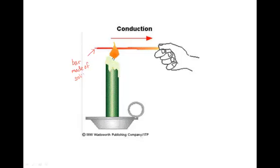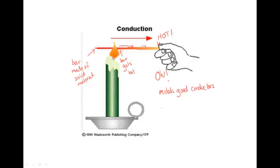Here we have a bar that's being held in a flame, and it's made of solid material. The heat from the flame will warm the particles — the atoms — in the bar. That energy will be transferred across the bar, so the heat energy moves along until eventually the person holding it is going to go, Ow! Metals are good conductors, so if that bar was made of metal, that person would shout Ow! pretty quickly, because the heat will travel very quickly. Plastic and wood are examples of materials that are not good conductors.